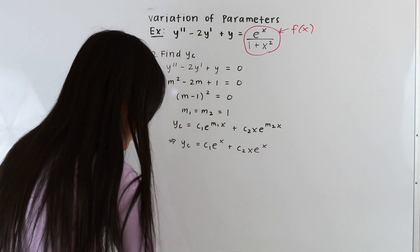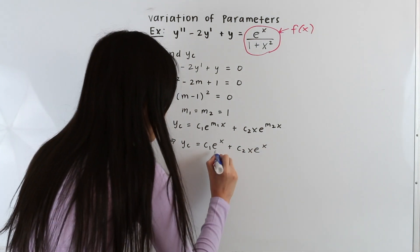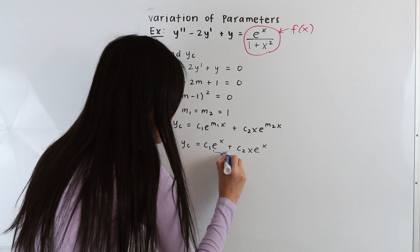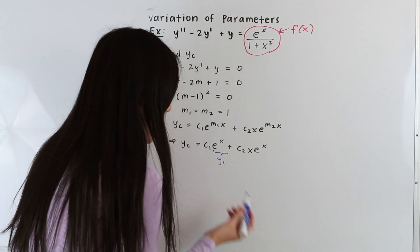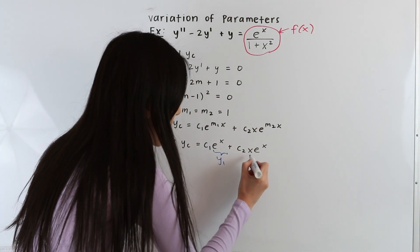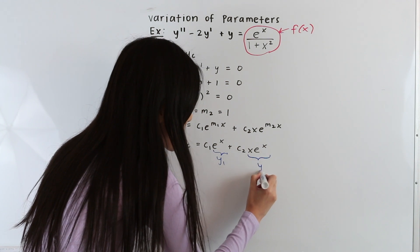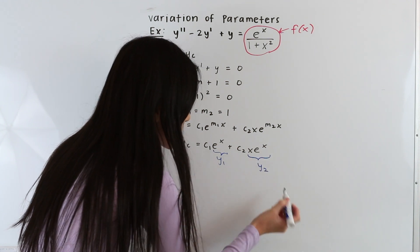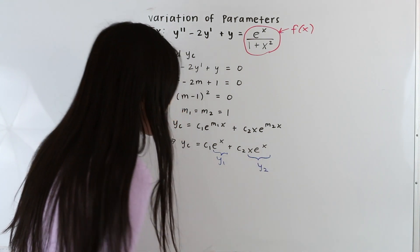From our complementary solution, we can identify y1 = e^x and y2 = x*e^x.